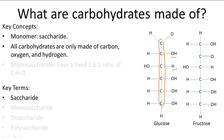A carbohydrate made of one saccharide is called a monosaccharide — mono equals one. So it's really easy to guess what a carbohydrate with two saccharides is called: a disaccharide, di for two.